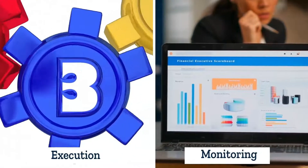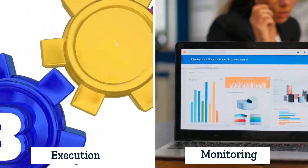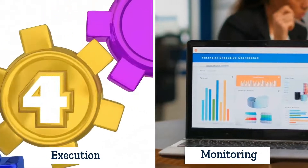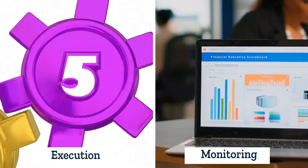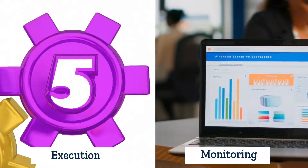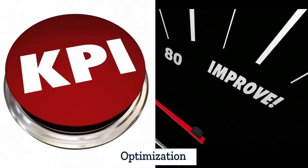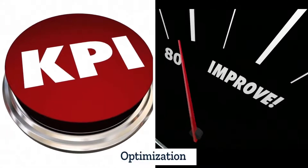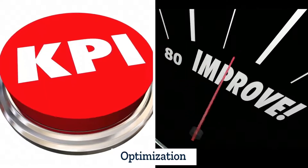Monitoring — tracking how the business process is performing by extracting key statistics and indicators. Optimization — using these indicators to identify points where the business process can be improved.